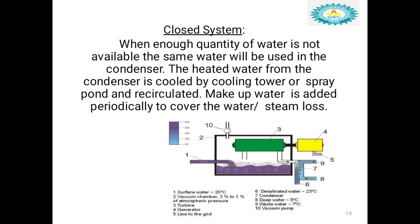Examples of the open system in condensers are jet condensers, and examples of the closed system are surface condensers. These are the processes and different circuits in a modern steam power plant.